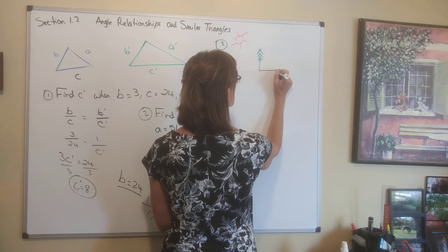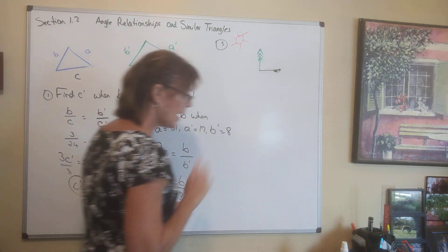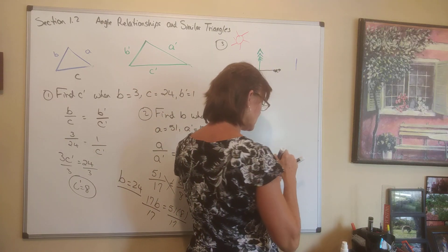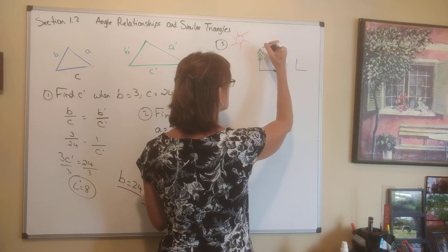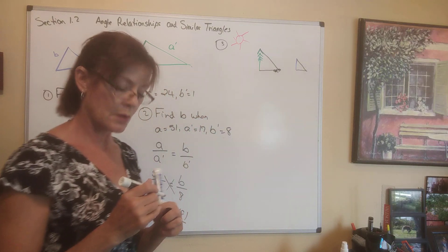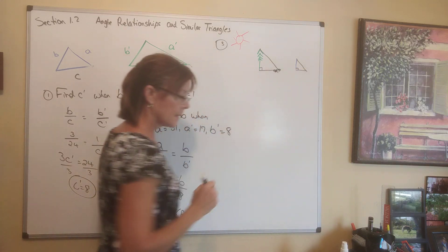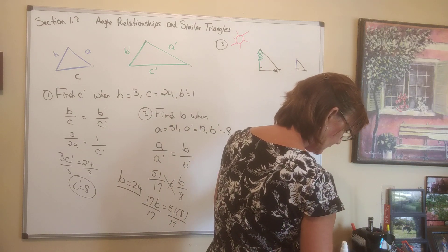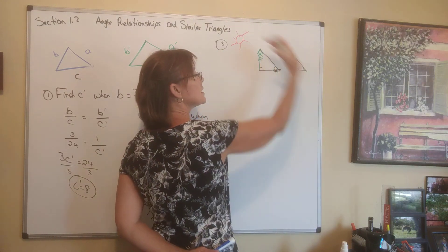At the same time, there's a 5-foot vertical pole also casting a shadow. The angle that the sun hits the tree is the same angle at which it hits the pole. This gives us a 90-degree angle at each base, and the sun's angle is the same for both — so these are similar triangles.